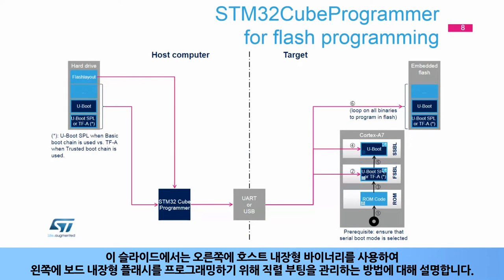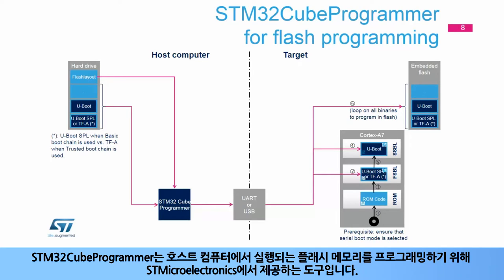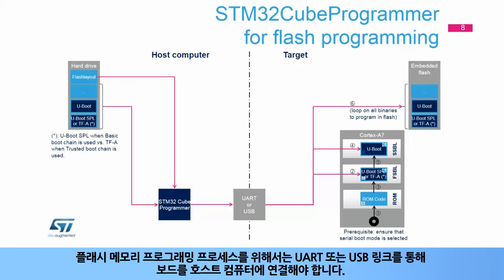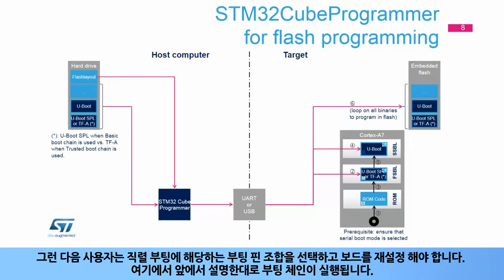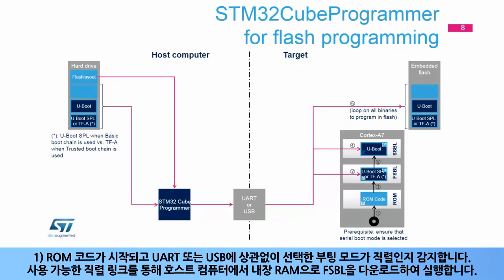This slide explains how a serial boot is managed in order to program the board-embedded flash with binaries available on a host computer. The STM32Cube programmer is a tool delivered by STMicroelectronics to program flash memories running on the host computer. The flash memory programming process requires the connection of the board to the host computer via a UART or USB link. Then the user has to select a boot pin combination corresponding to a serial boot and reset the board. From here, the boot chain is executed as explained previously.